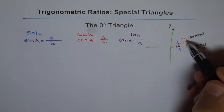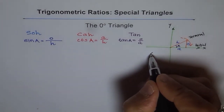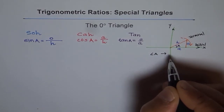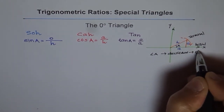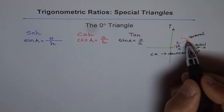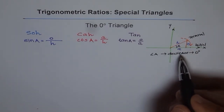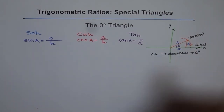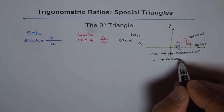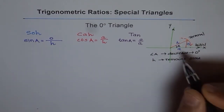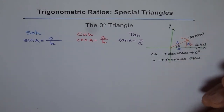As we bring the terminal arm closer to the initial arm, angle A decreases. The idea is to decrease angle A — make it smaller and smaller until it ultimately becomes 0 degrees. The angle will be 0 degrees when the terminal arm sits over the initial arm. The hypotenuse remains the same since it is the radius of the circle, whether the angle is large or small.